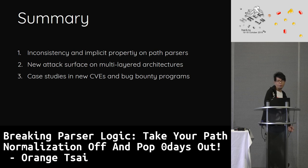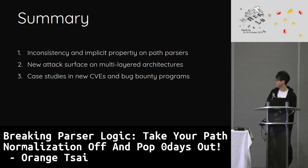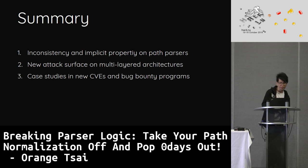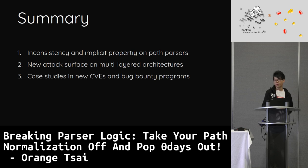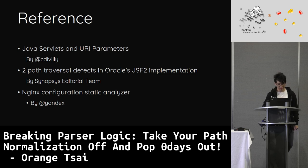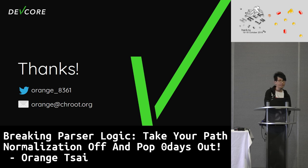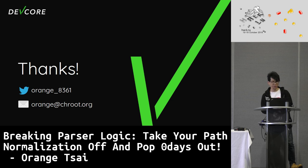Summary: In this talk, we first showed the blind sides in path parsers and path normalization, including inconsistency, method misuse, and off-by-slash problems. We then introduced a new attack surface on the reverse proxy architecture that can bypass access control and escape from context mapping. Finally, we showed several case studies on not only open-source applications, but also bug bounty programs. Here's my contact information — please let me know if you have any questions. I've posted slides and a full case study on my blog. You can follow my Twitter to see them. This is the end of my presentation. Thank you for being here.